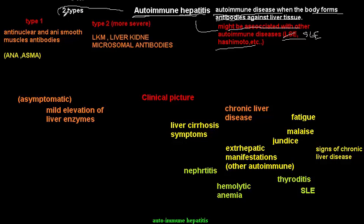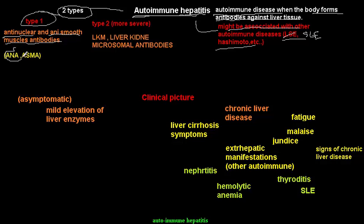We have two types of autoimmune hepatitis. Type 1 has auto-antibodies against the nucleus of hepatocytes — anti-nuclear antibodies (ANA) and anti-smooth muscle antibodies (ASMA). Type 2 is more severe than type 1, and has liver-kidney microsomal antibodies (LKM antibodies).